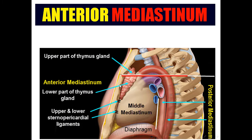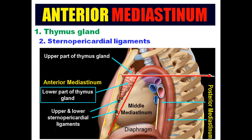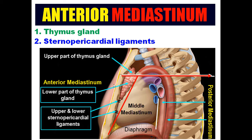The anterior mediastinum is in front of the heart — between the heart and the body of the sternum. It contains the lower part of the thymus gland (the upper part is in the superior mediastinum), and the sternopericardial ligaments — upper and lower sternopericardial ligaments.